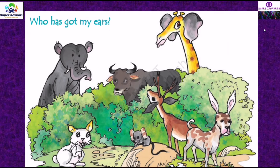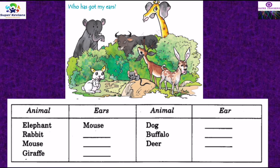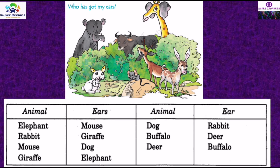In the first activity you can see 'Who has got my ears?' In this picture, different types of animals are there but they are having ears of some other animals. For example, the giraffe is having the ear of some other animal, the buffalo also, the deer also — they have exchanged their ears. We have to find out exactly whose ear they are having. The elephant is having the ear of a mouse.